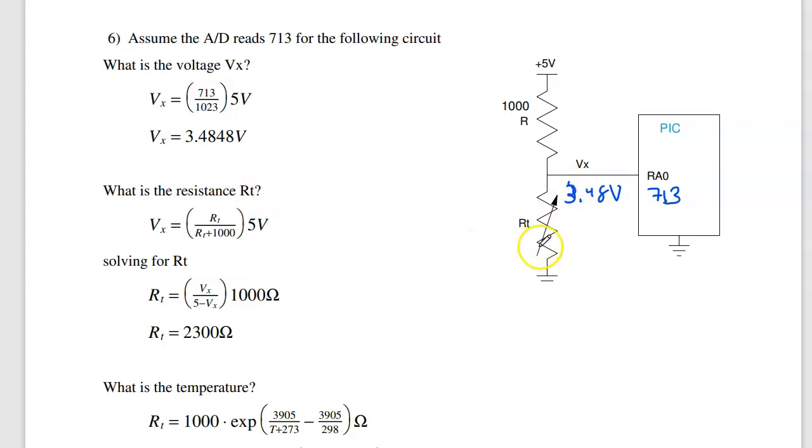The resistance. I know from voltage division, Vx is a function of R. Solving backwards, I have R as the function of voltage. R is apparently 2300 ohms.